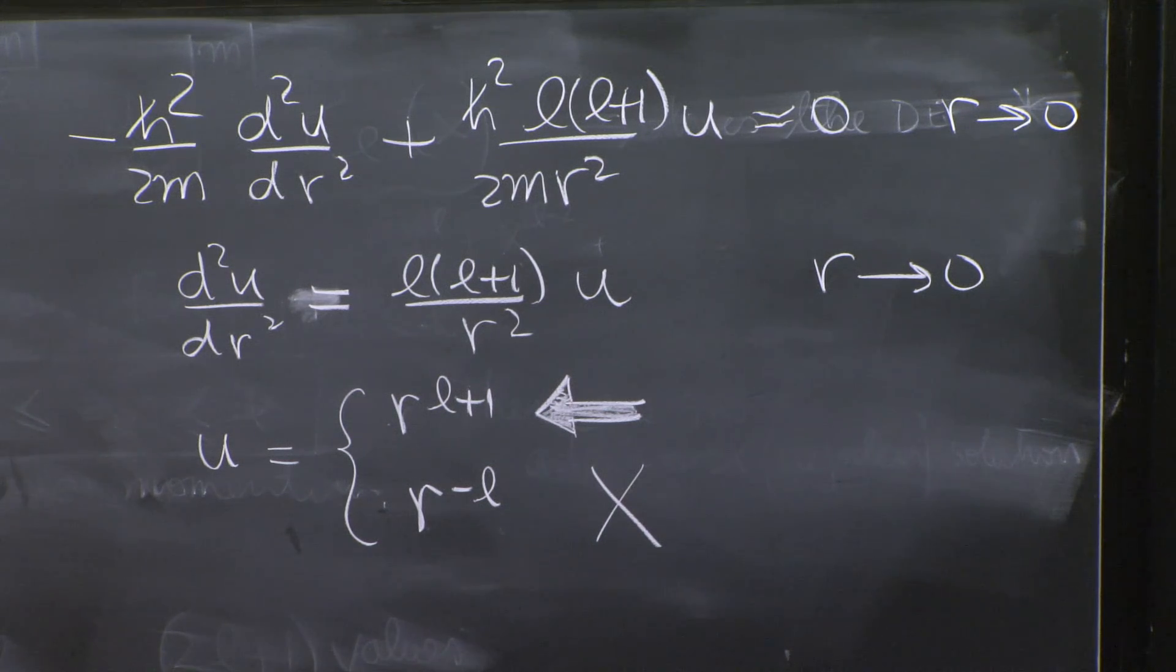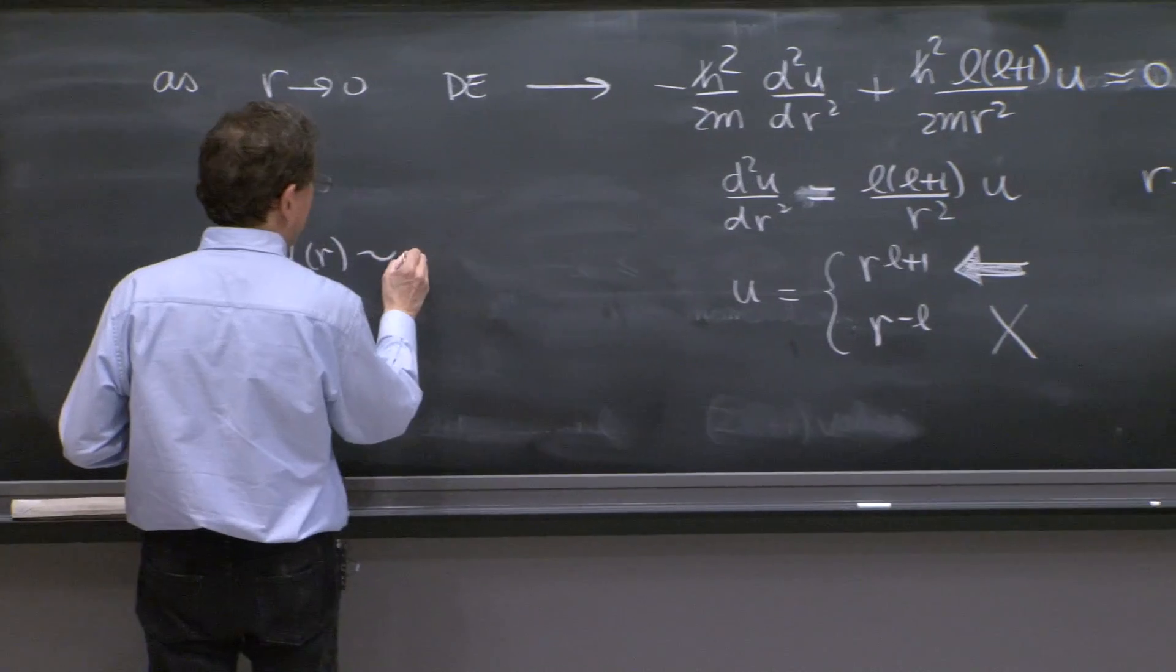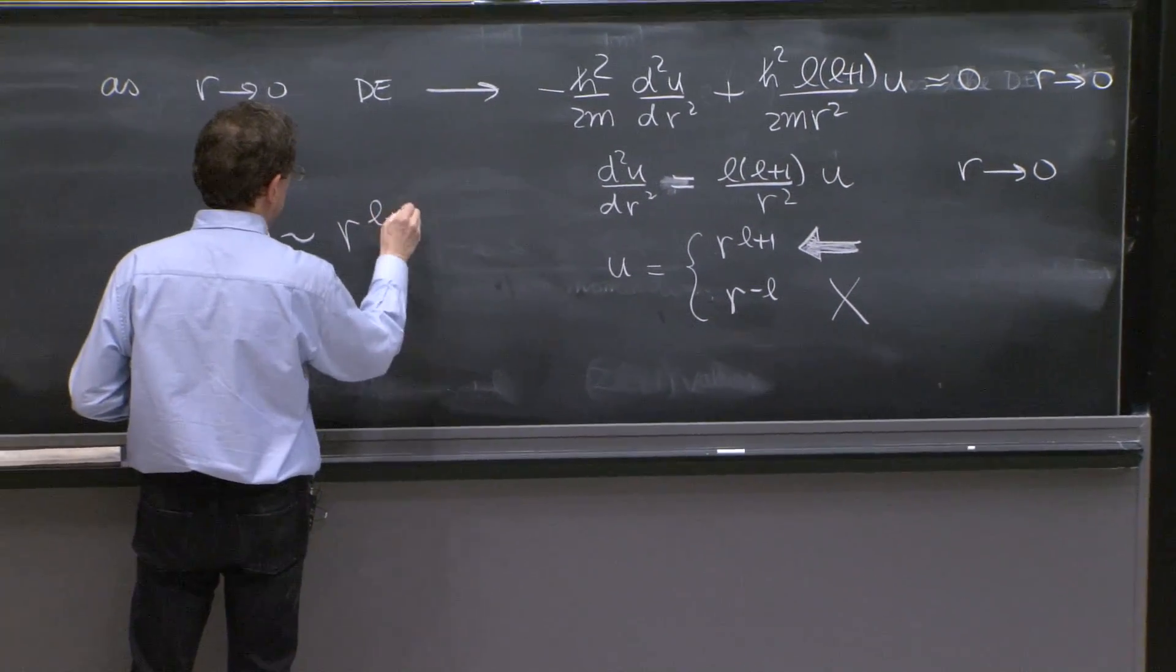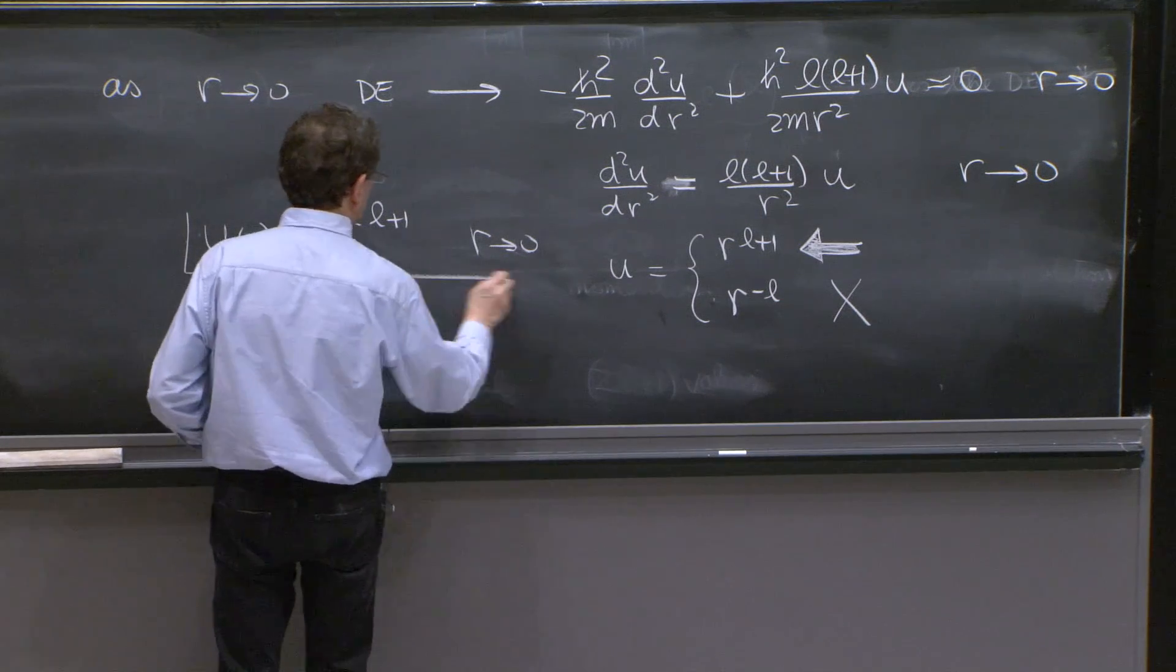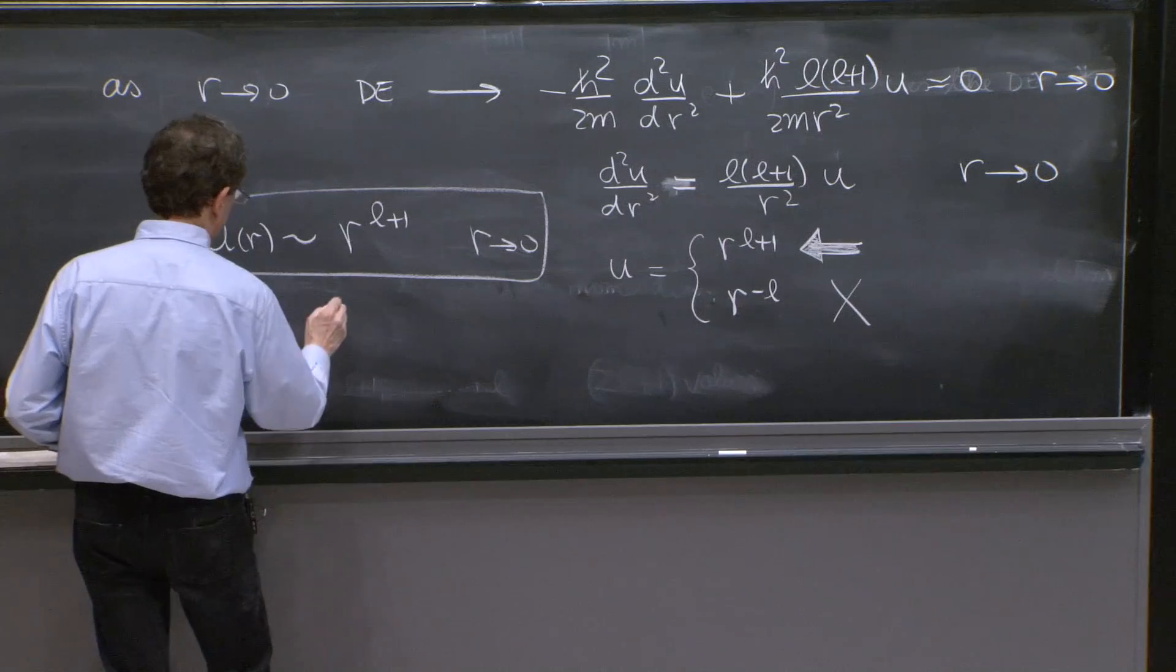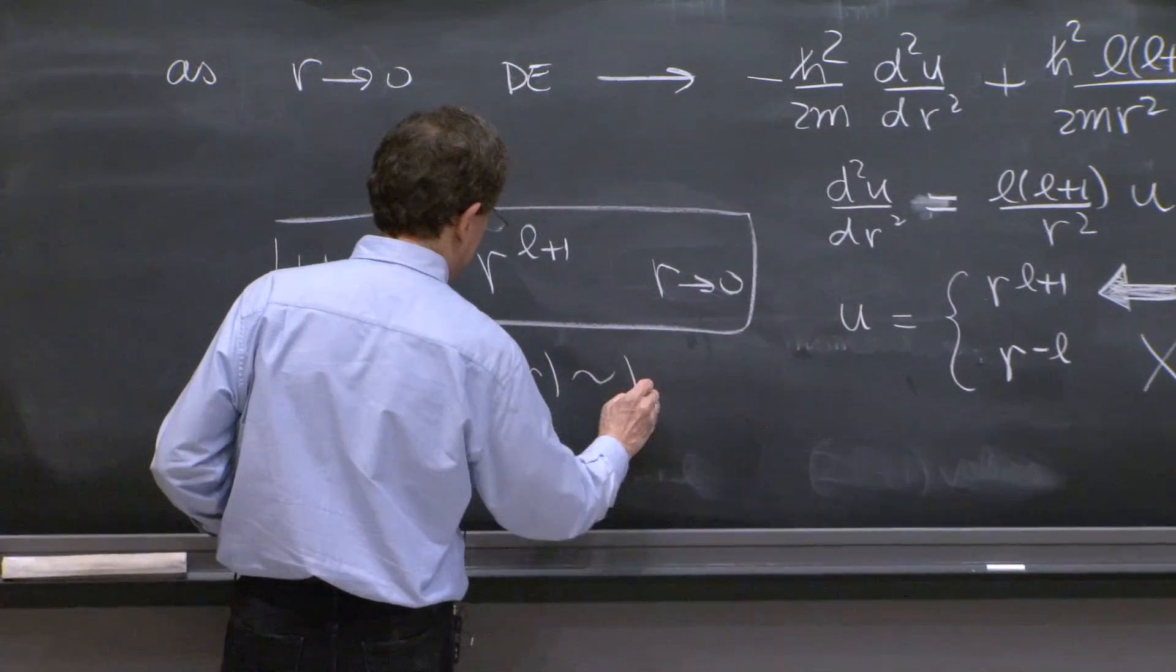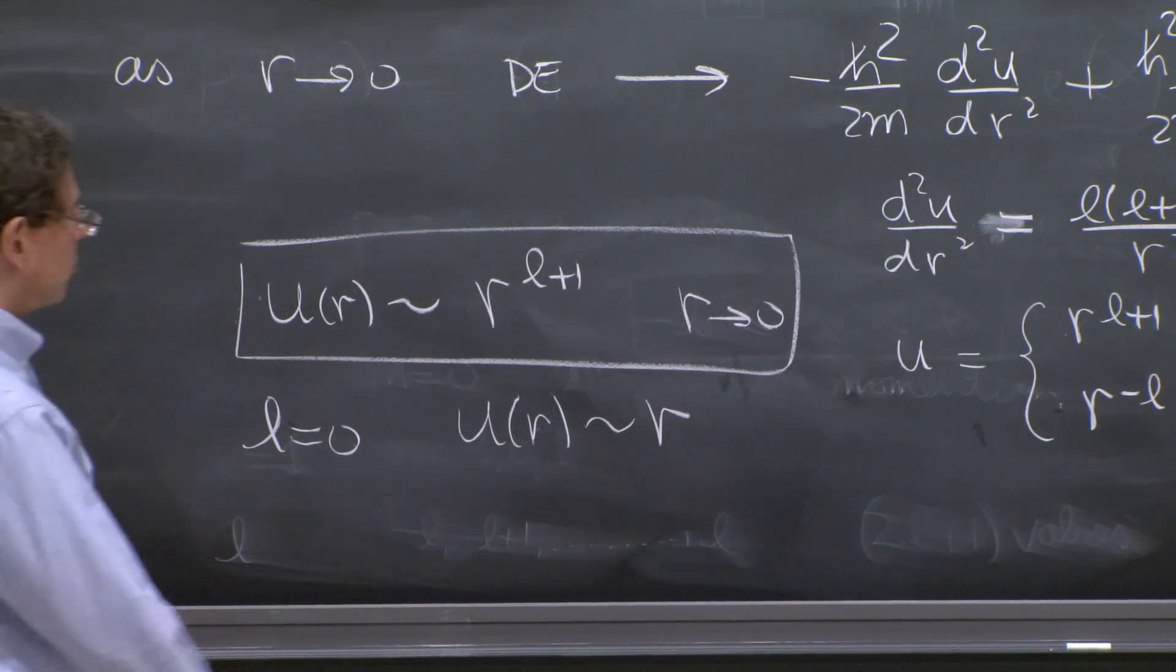So the bottom line of this analysis is that we will have u(r) behave like r^(l+1) as r goes to 0. And in particular, when l is equal to 0, u(r) will behave like r. So it will vanish as r goes to 0.